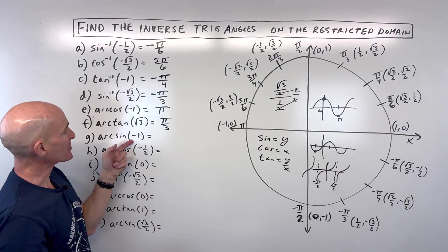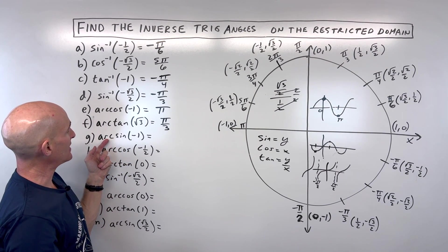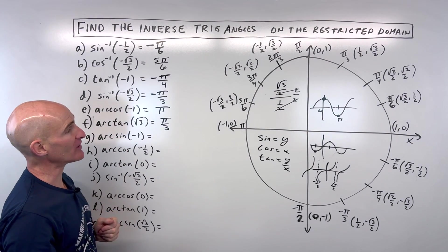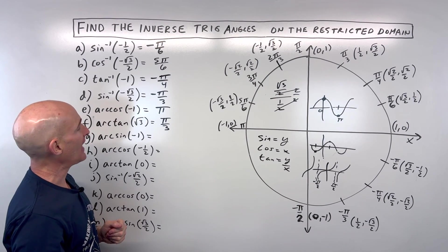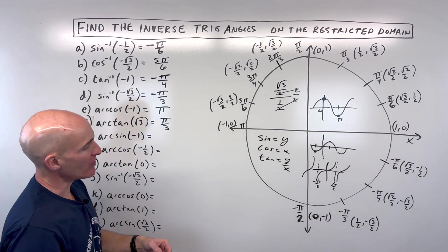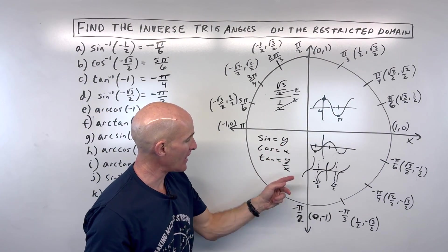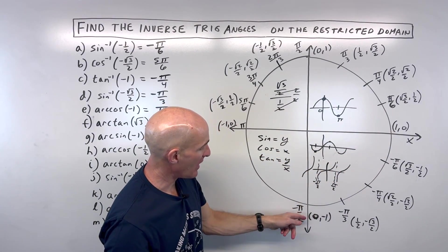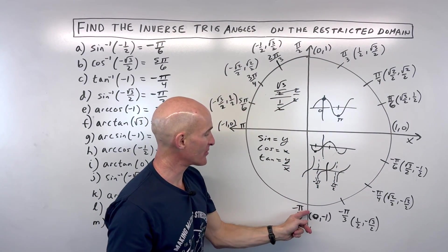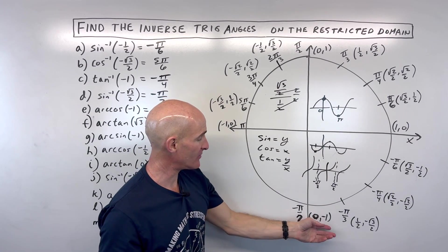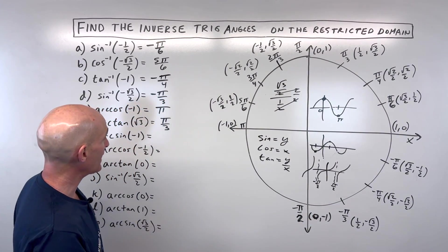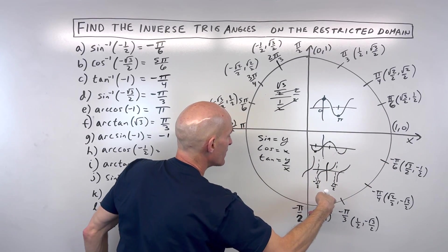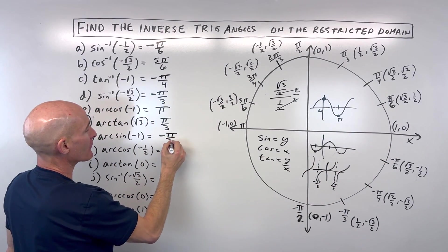For letter G: arc sine of negative one, meaning sine of what angle equals negative one. Sine is the y-coordinate, and that occurs at negative pi over two. Don't go all the way around and say three pi over two or 270 degrees — say negative pi over two, because we're going that direction in the restricted domain.